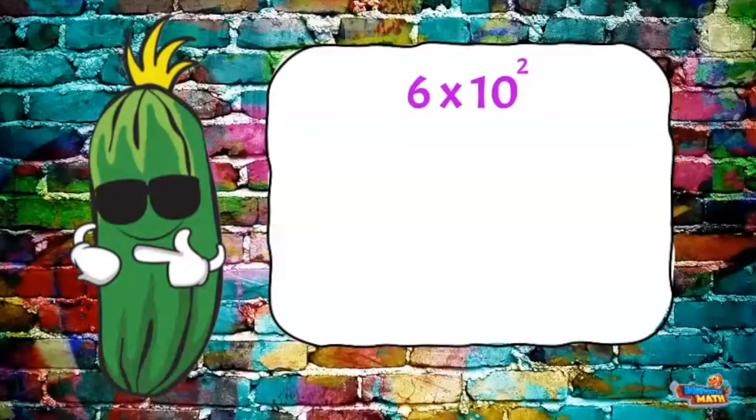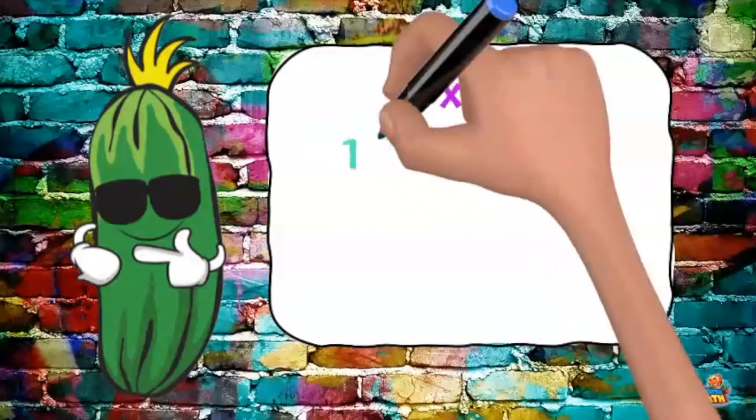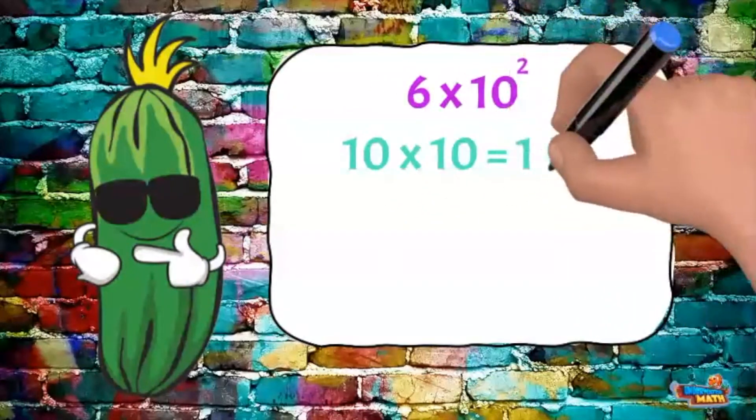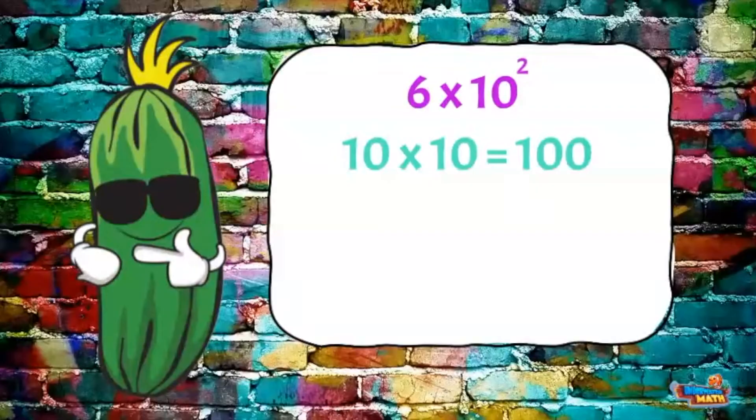10 with an exponent of 2 means to multiply 10 times 10, which equals 100. Check this out. The exponent is a 2, and there are 2 zeros behind the 1.